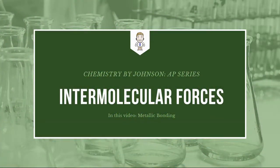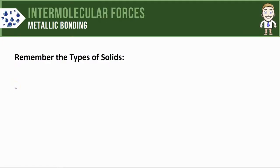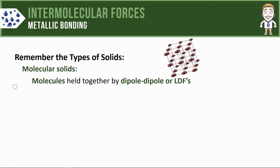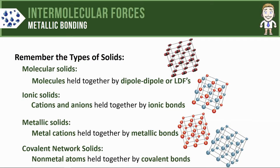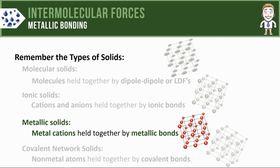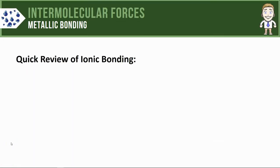In this AP Chem series video we're going to talk about metallic bonding. Remember that there are lots of different types of solids — molecular, ionic, metallic, and covalent network — and each of those is made of particles held together by a different attractive force. In this video we'll take a look at the intramolecular force that holds metallic solids together, known as metallic bonds.